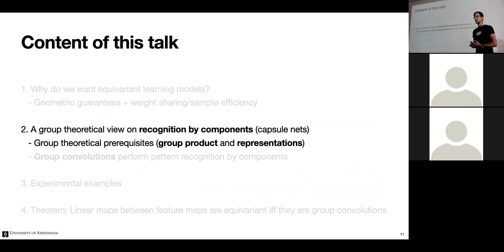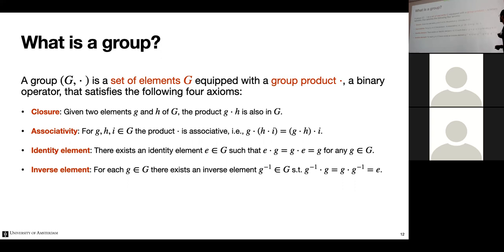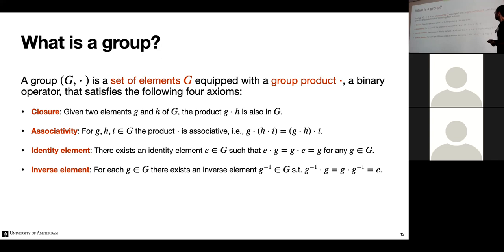Now let's get to group theory basics. A group has this definition: it is a set of elements G equipped with a group product — a binary operator that takes two elements and combines them into a new one, so the product of two elements is again in the group (closure). There's also an identity element — multiplying by it changes nothing — and an inverse that undoes the group product.